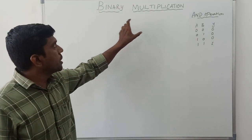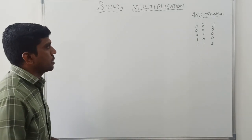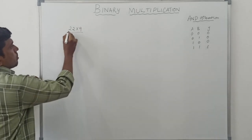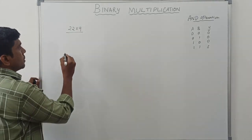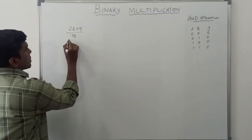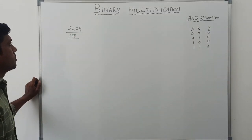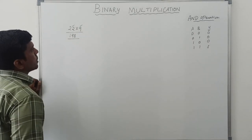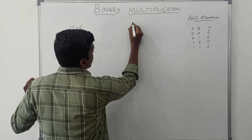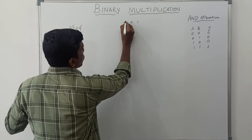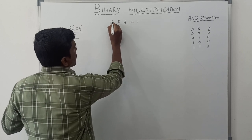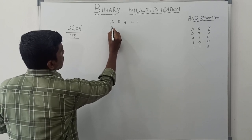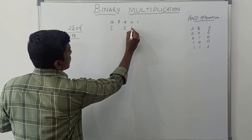Let us take two decimal numbers: 22 × 9. Just multiply these two decimal numbers — the answer is 198. Here I am taking two decimal numbers and converting them to binary. The decimal 22 in binary is 10110 (16 + 4 + 2 = 22), and the decimal 9 in binary is 1001. Remaining bits are set to 0.